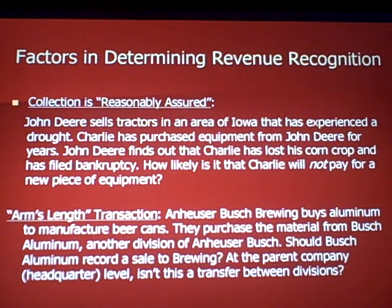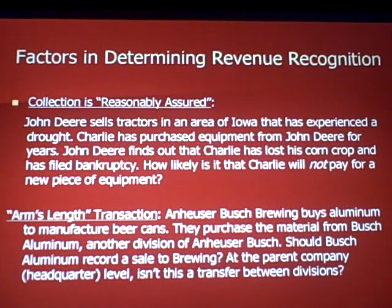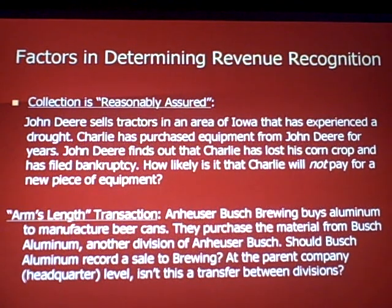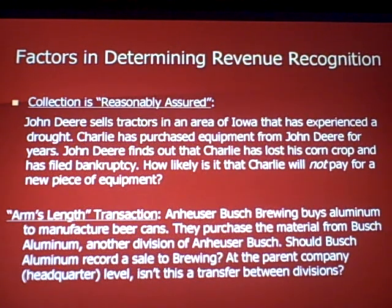Another factor is the arm's length transaction. Anheuser-Busch Brewing buys aluminum cans — they purchase material from Bush Aluminum, another division of the same company. Should Bush Aluminum record a sale to Bush Brewing? At the parent company's headquarters level, Anheuser-Busch owns both companies, so this is just a transfer between divisions — not a sale to an outside third party. At Anheuser-Busch's headquarters level, it's probably not revenue.